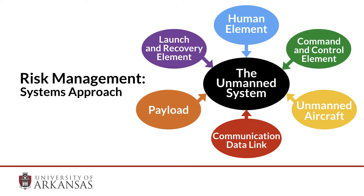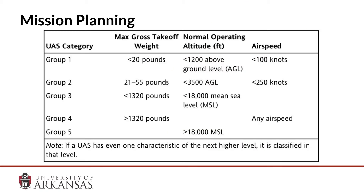You assess each of these areas in the same manner to come up with a composite score. Here is a great chart to assess risk based on the size of aircraft. Clearly, a Group 1 aircraft has less risk because of its weight. Our small UAS operations will focus on these types of operations, and they have the lowest risk.